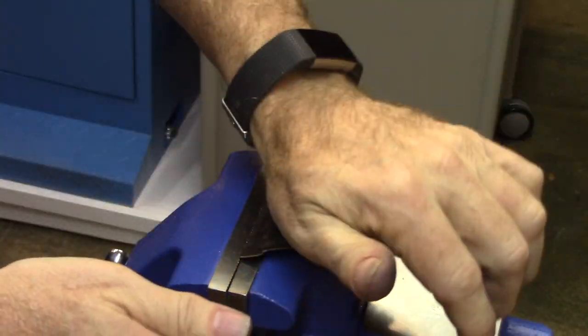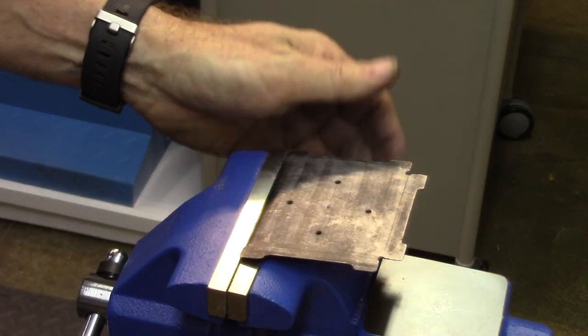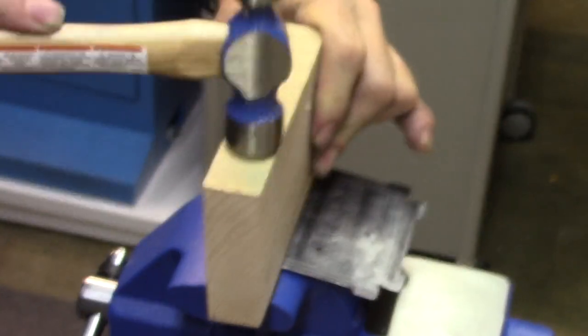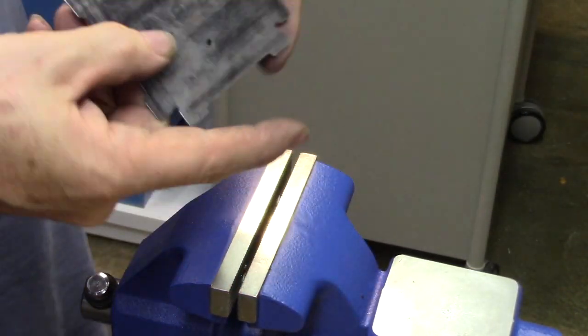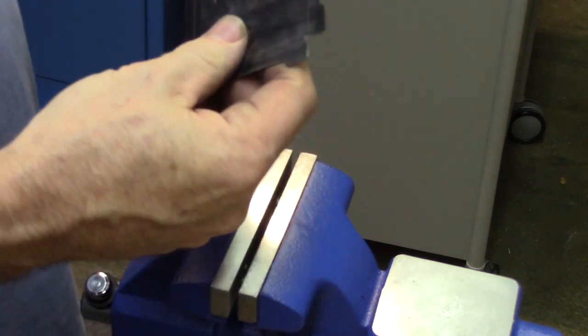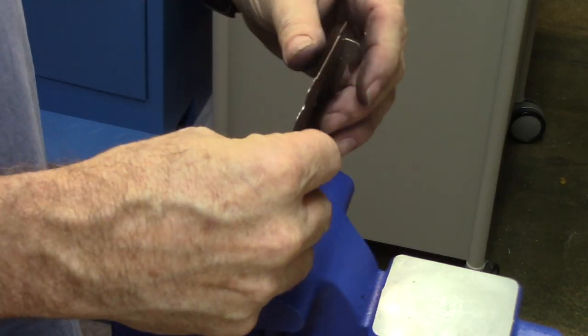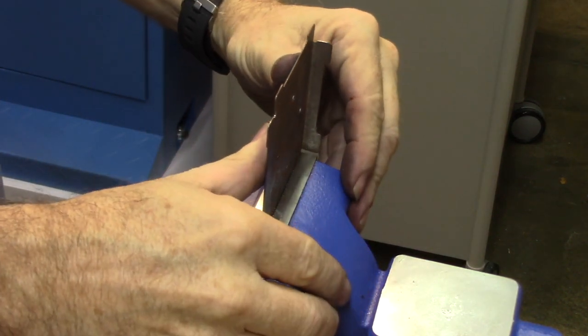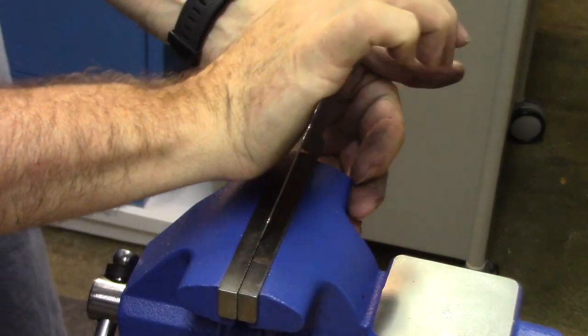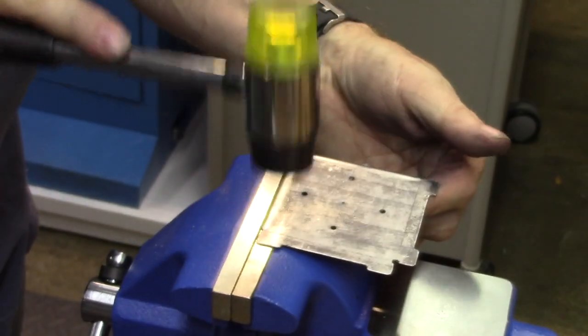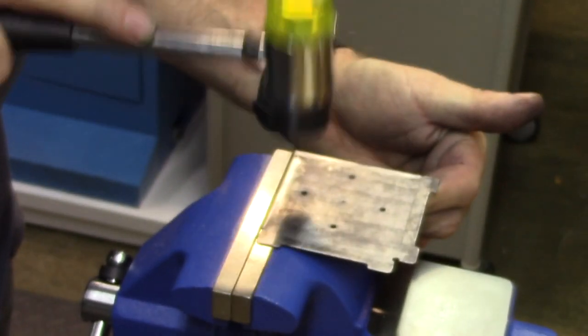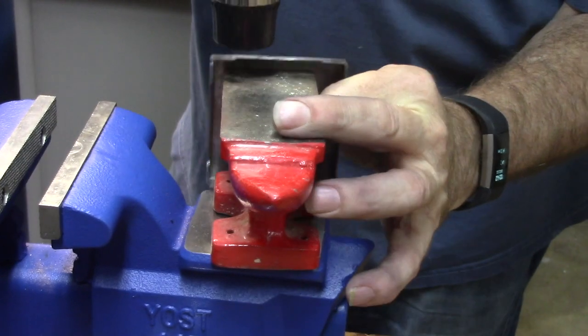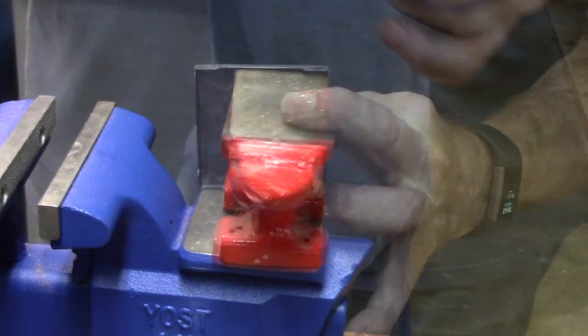I don't have a sheet metal brake to form the sides of the stand, so I pressed my vise, a hardwood block, and a soft-faced hammer into service. This worked fine until the last edge, but fortunately I have a small anvil that worked out in a pinch.